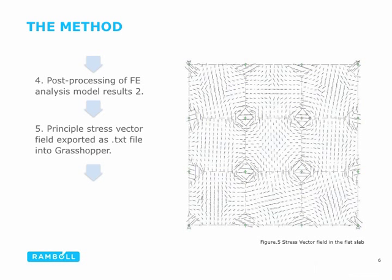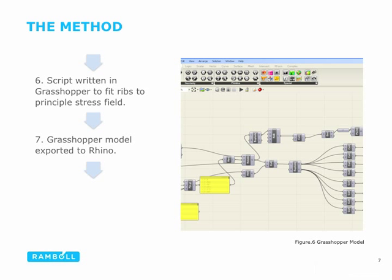We then go into post-processing of the FE analysis model. We export the principal stress vector field as a text file into Grasshopper — the stress vector field in the flat slab is shown on the right. Once we've got this into Grasshopper, ribs are fitted to the principal stress field using a script we've written, and the Grasshopper model is then exported into Rhino to give us a 3D model to manipulate the geometry.